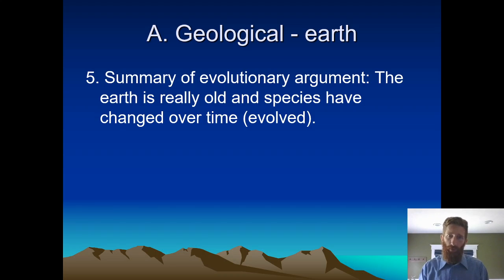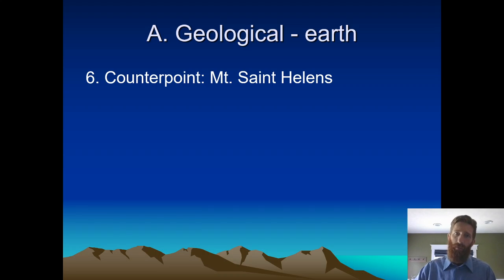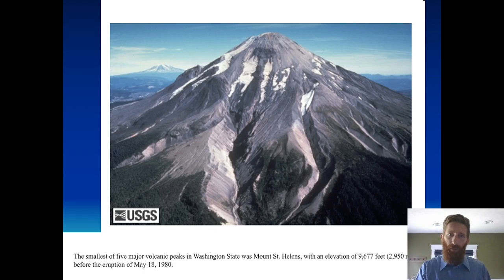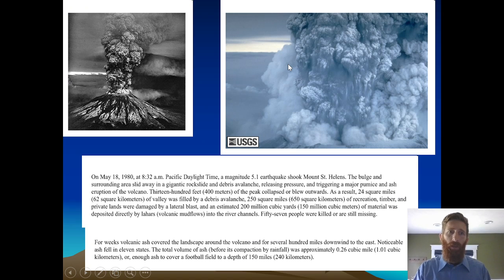So here's a summary: Earth is really old. Species have evolved, or species have changed over time. Now there are a couple of counterpoints — scientifically valid counterpoints — but nowhere near the amount of evidence that mainstream science has. So Mount St. Helens is a classic poster child for fast geologic change. We get this big old bulge that grows at a rate of up to five feet per day. So mountains can grow very quickly.